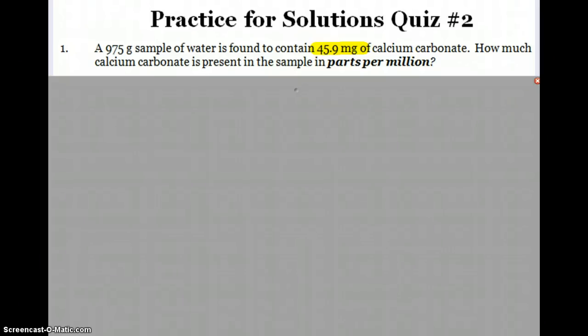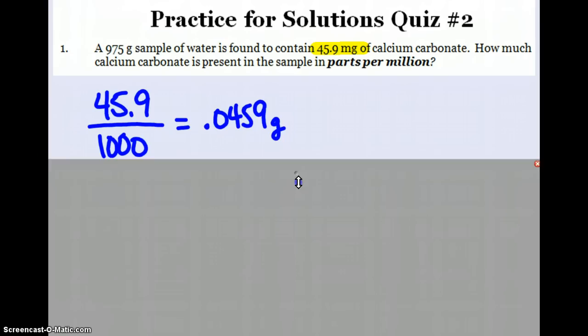Here are the answers to the practice for solutions quiz number two. The first question is a parts per million question. We've got a 975 gram sample that has 45.9 milligrams of calcium carbonate in it. How much is that in parts per million? Remember, with parts per million we need to compare solute to solution and they both have to be in grams.